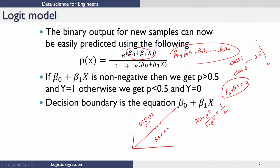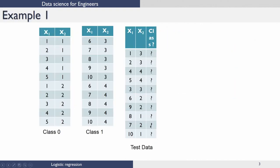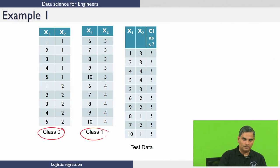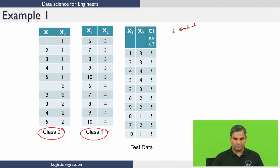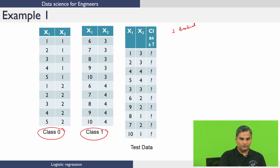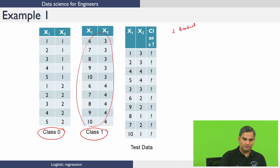This model is what is called a logit model. Let us take a very simple example to understand this. We have data for class 0 and data for class 1 — this is clearly a two-dimensional problem, so the hyperplane is going to be a line. A line will separate this, and in these kinds of classification problems, this is called a supervised classification problem, because all of this data is labeled. I already know that this data is coming from class 0 and this data is coming from class 1.